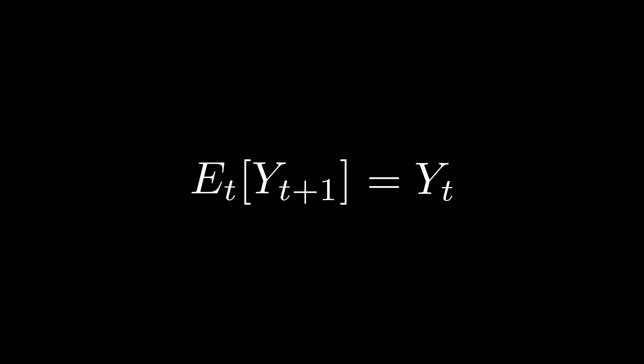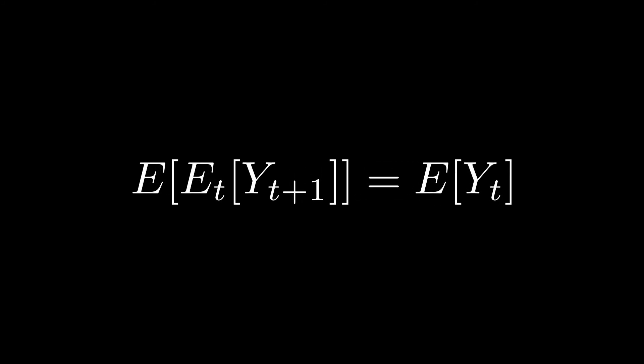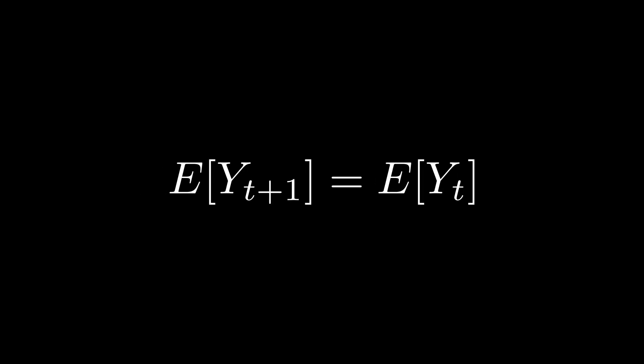One neat trick that we can use is the tower rule, which tells us that after we take the expected value of both sides, the conditional expectation side just disappears. And using some recursion, that tells us that the expected value at any time t of Y is just the starting value.